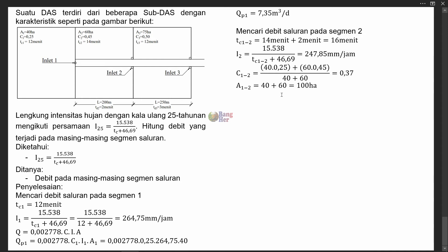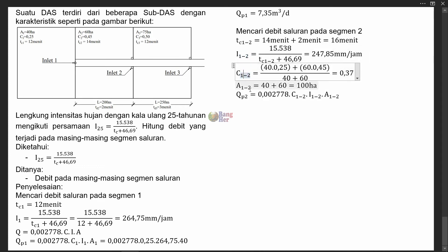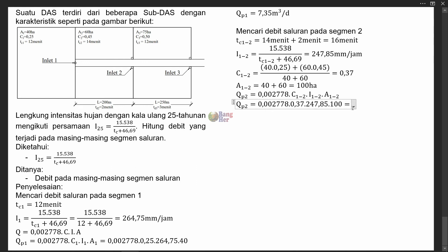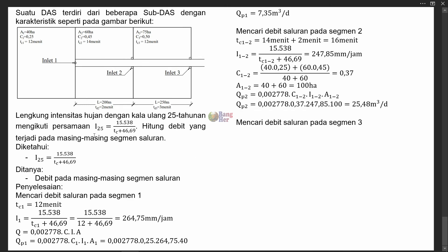C sudah diketahui, I sudah diketahui, dan A sudah diketahui, sehingga kita bisa mencari debit pada segmen 2. Persamaan yang digunakan sama: Q = 0,002778 × C × I × A. C = 0,37, I = 247,85 mm/jam, A = 100 hektare. Kalau dihitung semua, maka kita akan memperoleh hasil sebesar 25,48 m³ per detik.